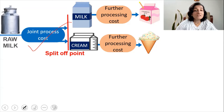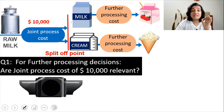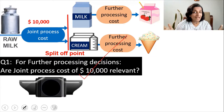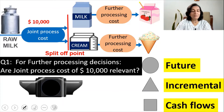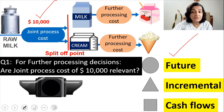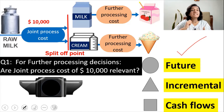With these three rules, you are ready for the game. Suppose the joint process cost incurred is $10,000. The question is: for further processing decisions, is the joint process cost of $10,000 relevant? To answer this, check whether it satisfies the three basic features of relevant costing: is it related to the future? Is it incremental — an additional expense? And is it affecting our cash flows? If all three conditions are satisfied, it is a relevant cost.